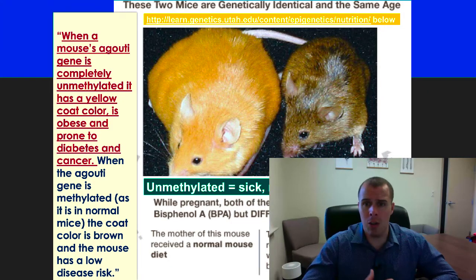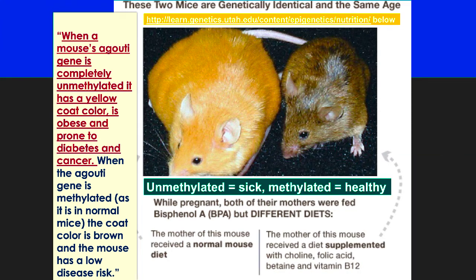Here's a really cool study I thought would be interesting to share. They took an agouti mouse and fed it BPA — a chemical that disrupts its ability to methylate. Then they fed another mouse things that did not interfere with methylation but actually improved methylation pathways, such as reduced folate, B vitamins, betaine, and choline. Betaine is really important for stomach acid. The mouse given bisphenol A became discolored, diseased, overweight, and started developing cancer. The mouse on the viewing right, which was properly methylated, developed into a normal, healthy mouse.